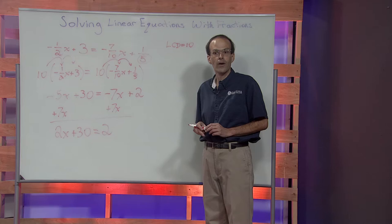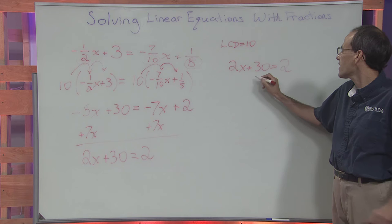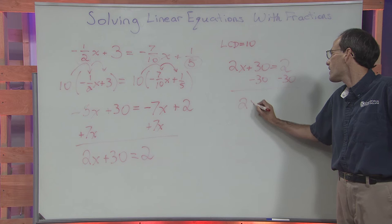The variables have been moved to the left side of the equation. Now we'll move the constants to the right-hand side of the equation. Two x plus thirty is equal to two. To move that constant to the right-hand side, we'll subtract thirty from both sides of the equation.